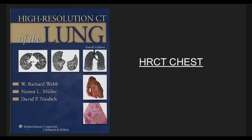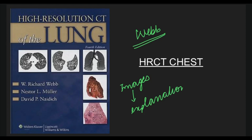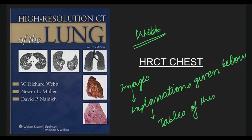Next comes Webb, which is for the HRCT chest. It is very nicely written and you have to read everything in this book. If you are not getting enough time to read every single chapter, just go through the images of every chapter, the explanations given below, and the tables, which are very important. So Webb is for HRCT chest, and Osborn's was for CT brain and MR brain.